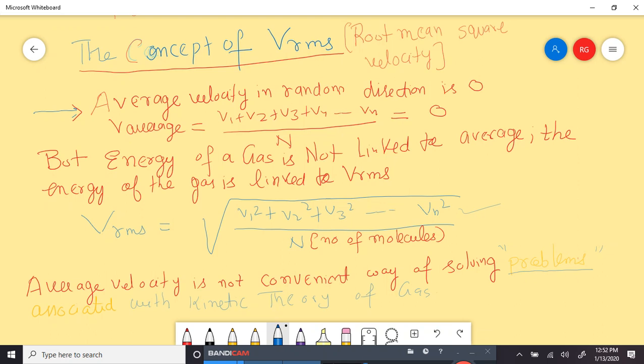Now, this handles the problem which we had with the average velocity, because now if you try to solve the expression for pressure and the kinetic energy, it will not be zero.